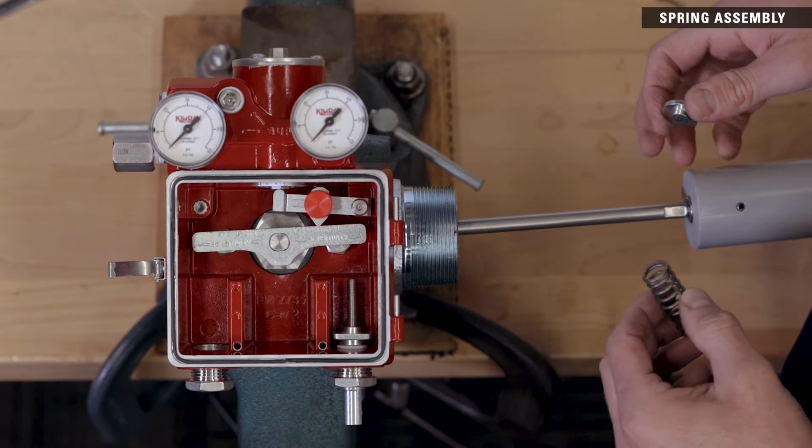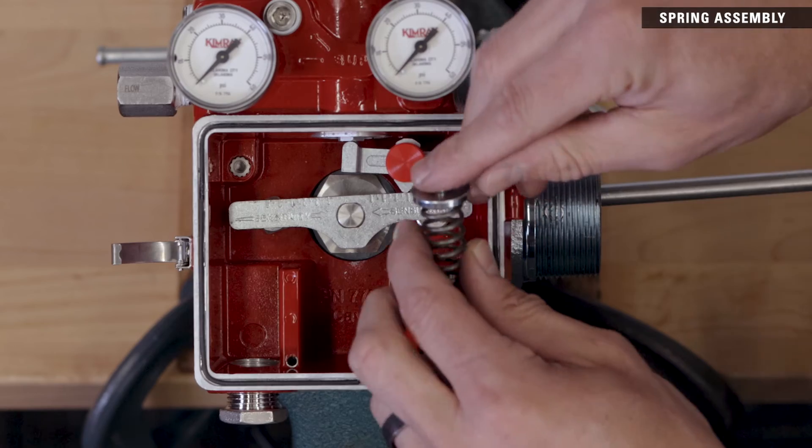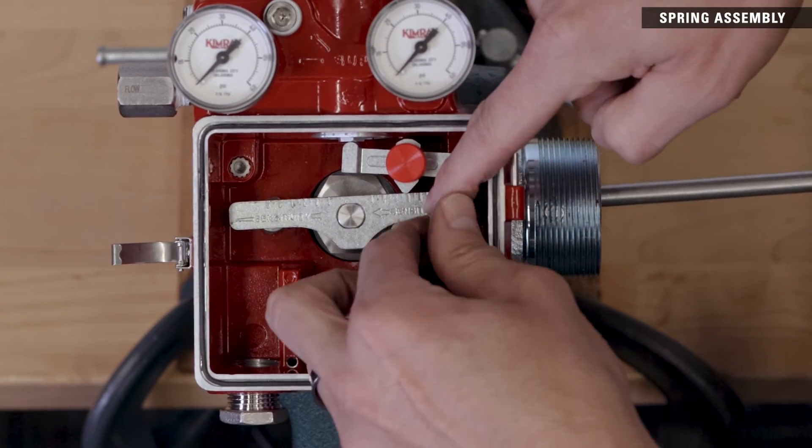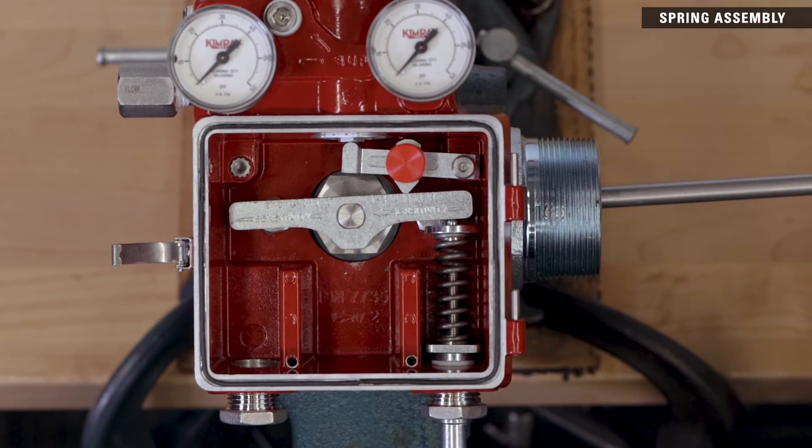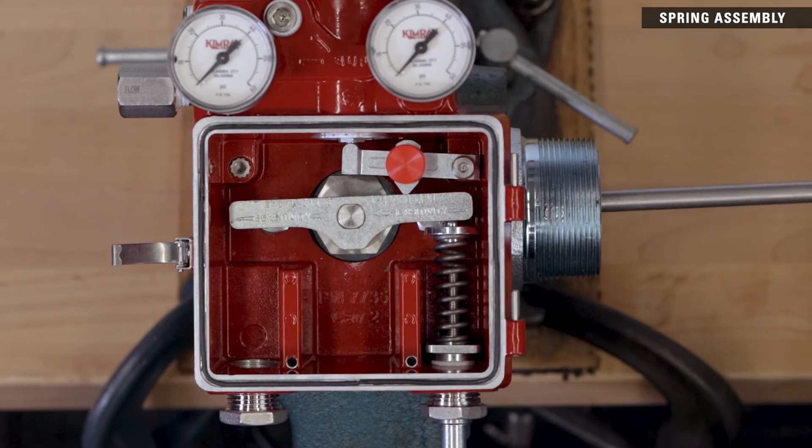Lift the displacer arm and install the spring and upper spring plate. Make sure the rounded protrusion aligns with the hole in the torque lever.